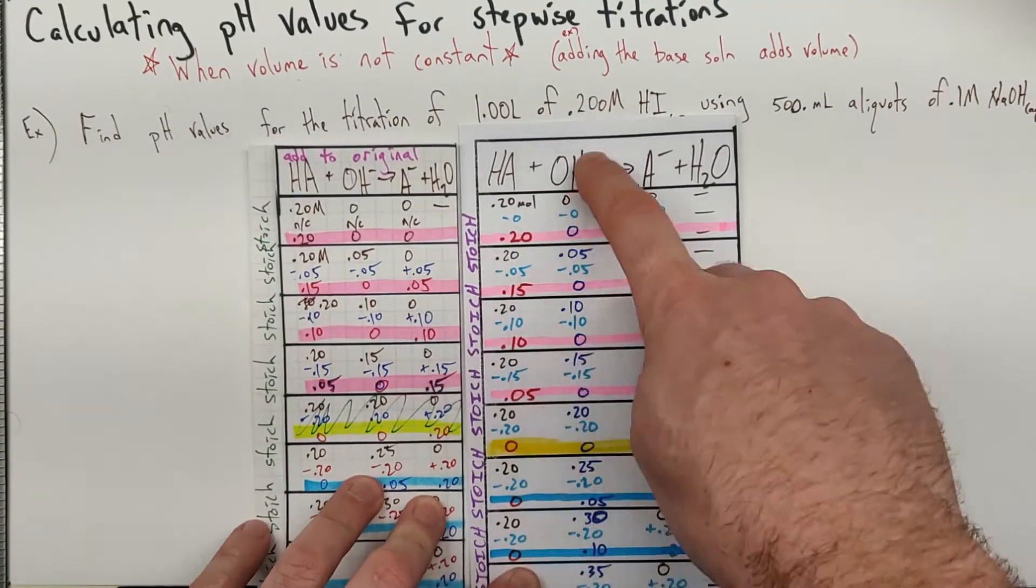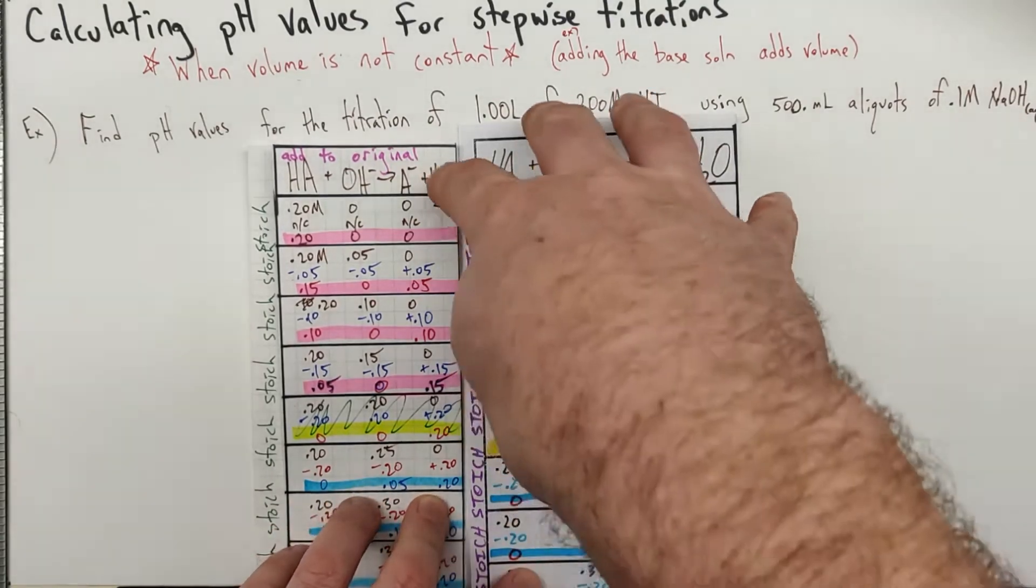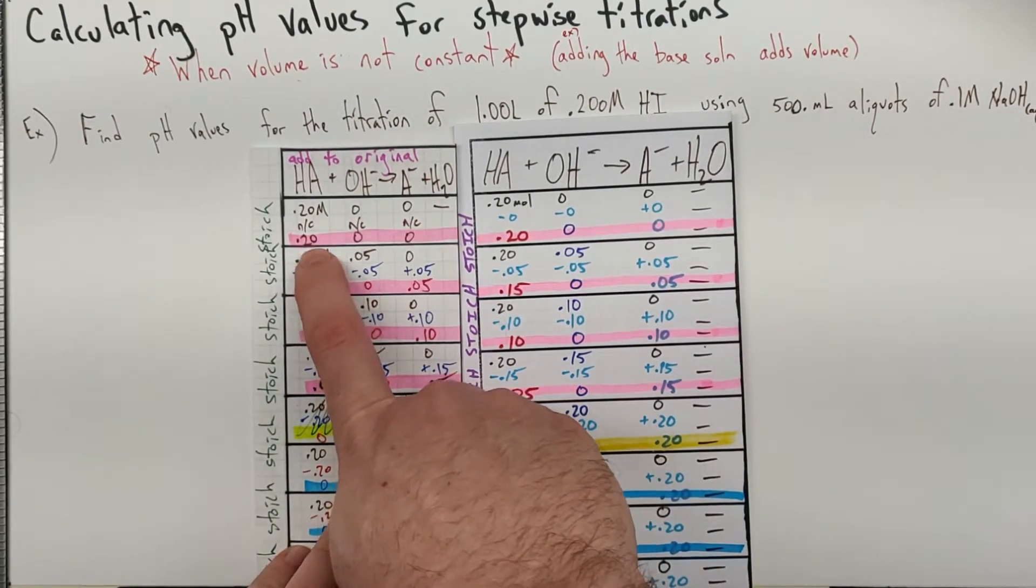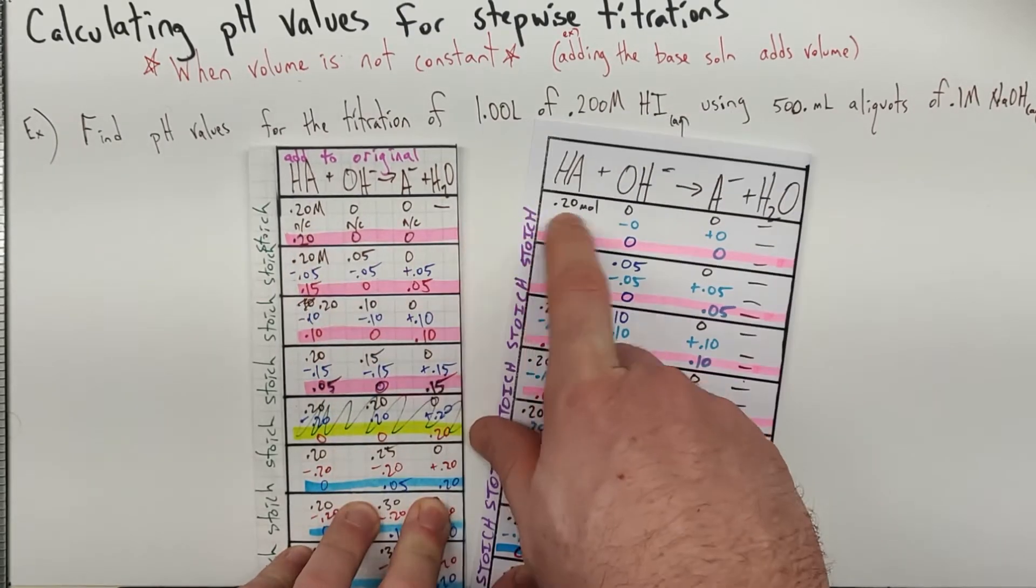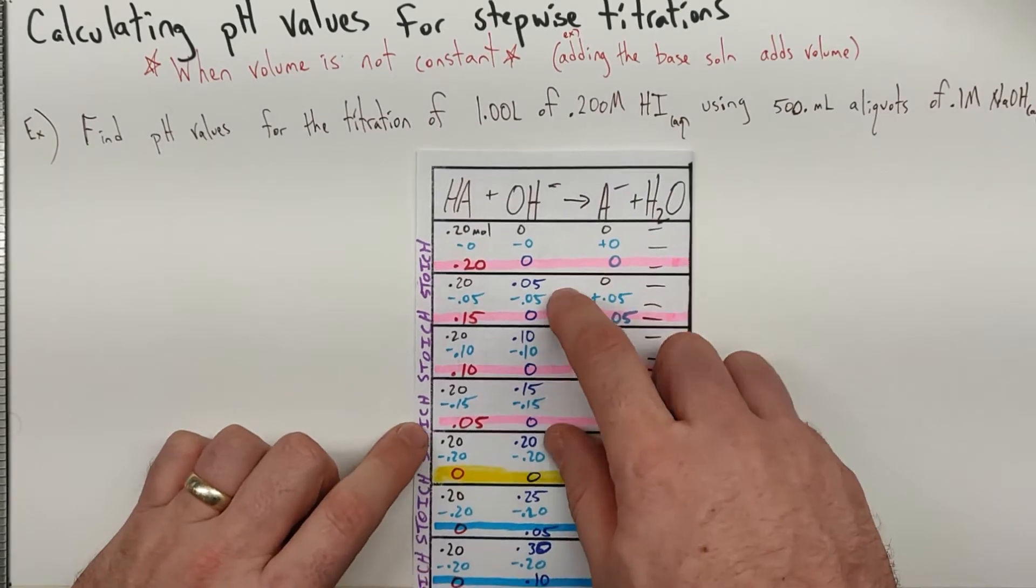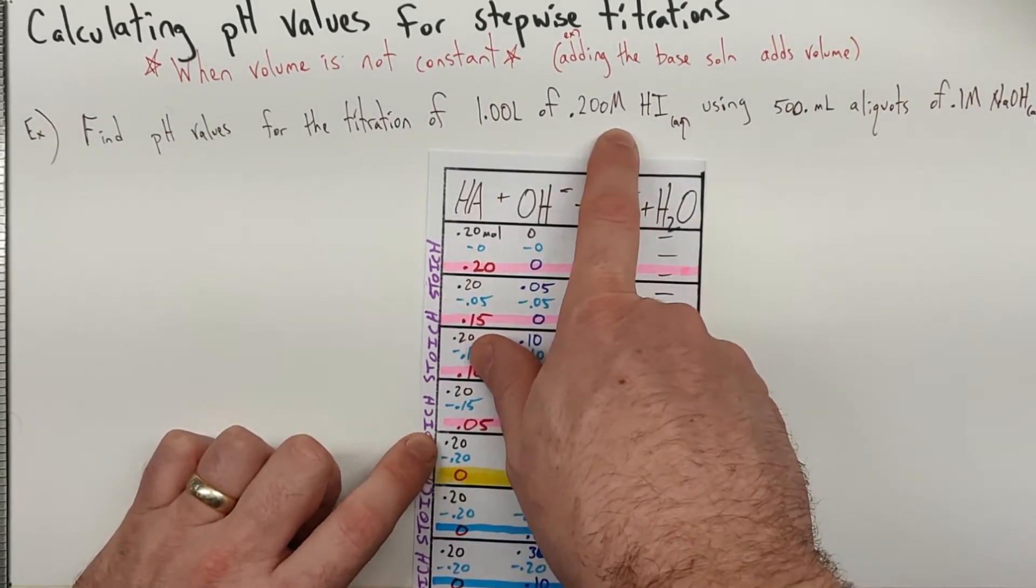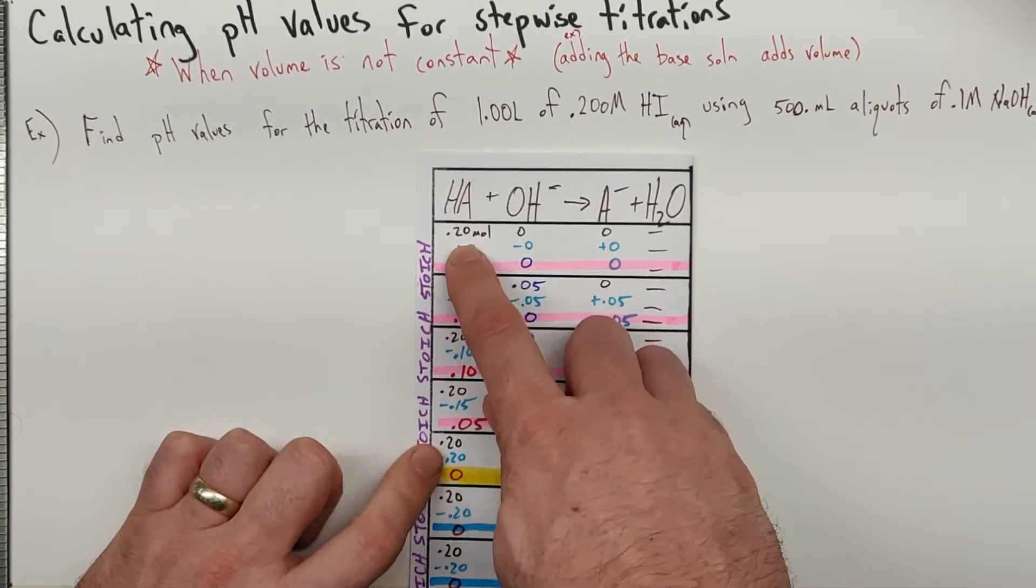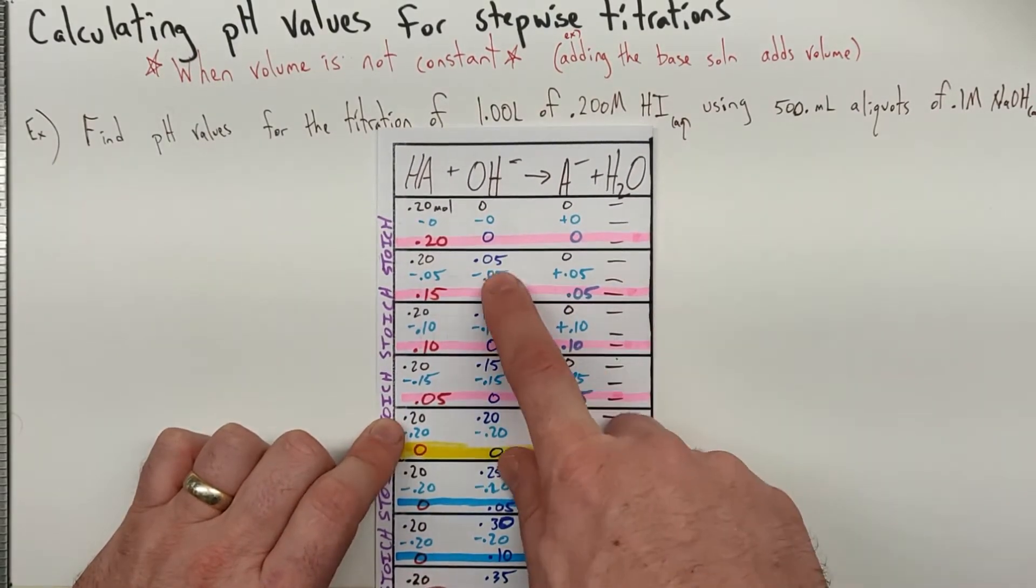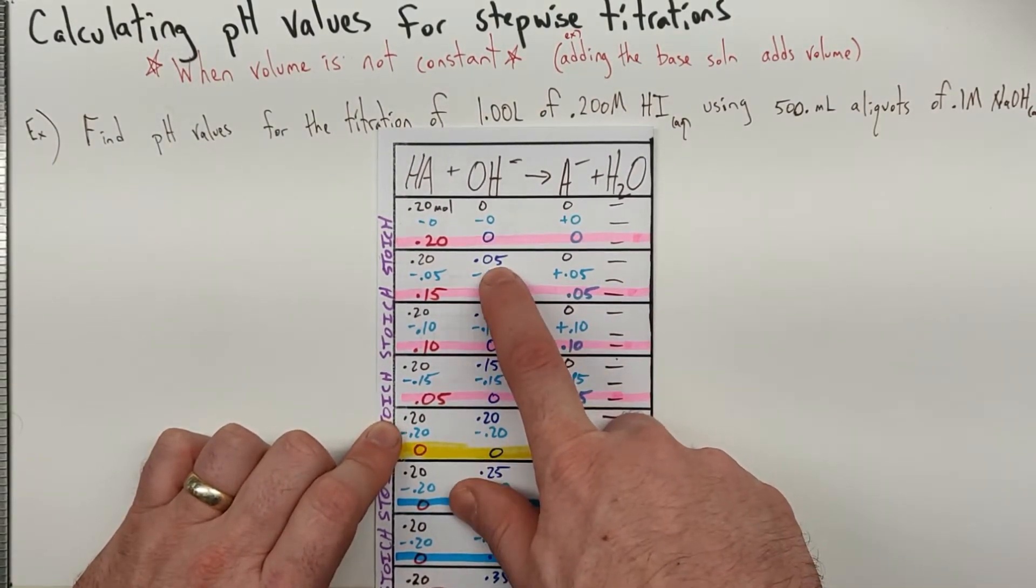So this was our sheet last time. This is the one I'm going to work off today. You'll notice every single number is the same as it was except now instead of molarities, I'm doing this with moles. We've got 0.20 molar HA, 1 liter of it, that's 0.20 moles. And 500 milliliters, 0.1 molar NaOH, that's 0.05 mole increments each time.